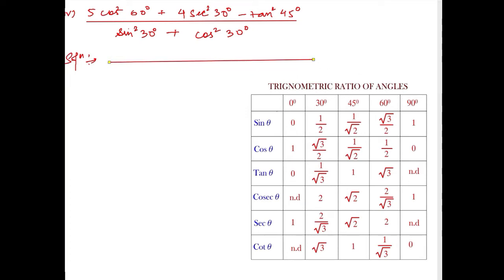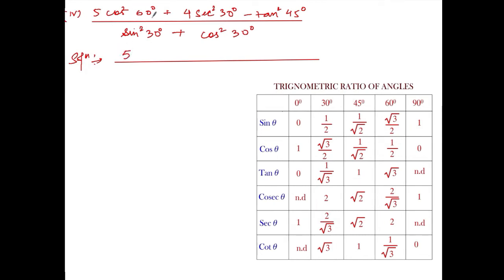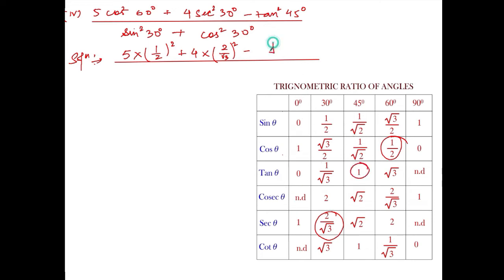Now, cos 60° is 1/2, so we write 5 into (1/2)². Next, sec 30° is 2/√3, so write 4 into (2/√3)². Then tan 45° is 1, so we write 1². For the denominator: sin 30° is 1/2, so (1/2)², and cos 30° is √3/2, so (√3/2)².